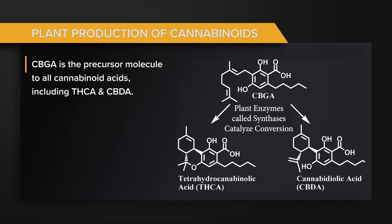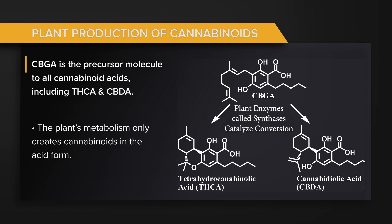CBG acid is kind of the beginning or starting molecule for other cannabinoid acids. Based on your plant's genetics and how those enzymes are expressed from them, you can result in high amounts or equal amounts of THC acid and CBD acid. These are what the plant makes — the plant's molecular machinery stops at production of the cannabinoid acids.